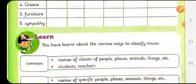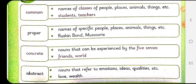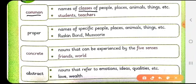Let's move on and see what all these different kinds of nouns are. First we have the common noun. What is a common noun? Common nouns are names of classes of people, place, animals, things etc. Like students, teachers and there are some more examples like boys, girls, chair, table. These are all common nouns which show the names of the same class.